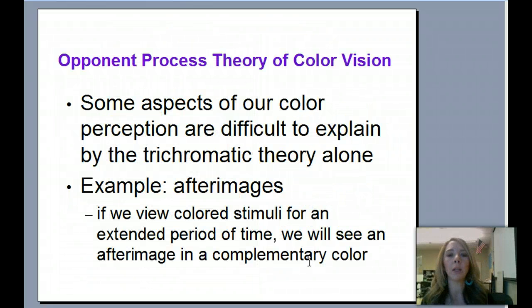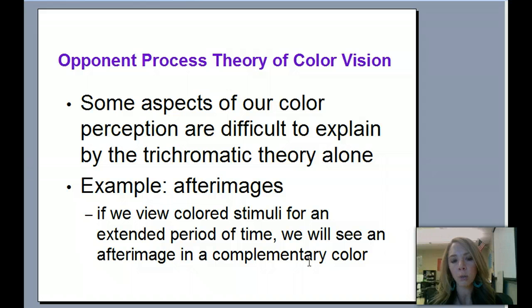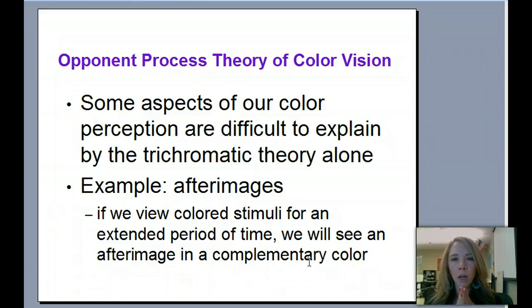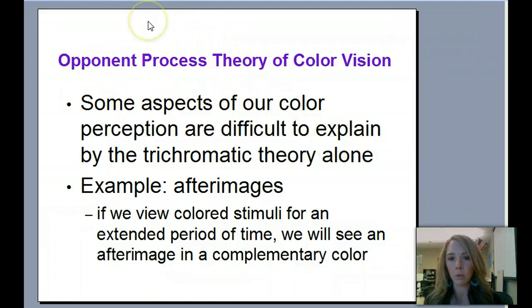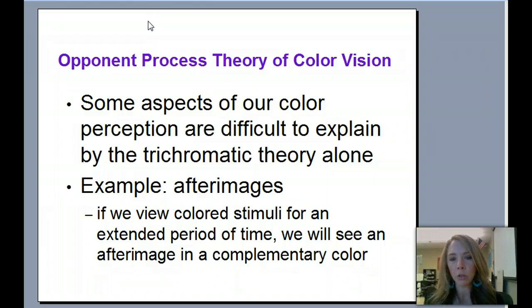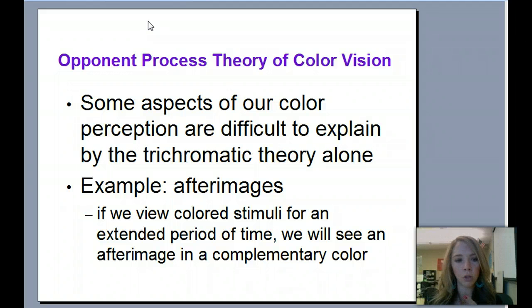The trichromatic theory is different from the opponent processing theory of color vision. The trichromatic says I have three different receptors for wavelengths and put all these colors together, but there are aspects of our color vision not easily described by trichromatic alone — that's where opponent processing theory came in. There are things called afterimages that are not described by the trichromatic theory. If your eye is constantly staring at a certain color, you get this afterimage afterwards.